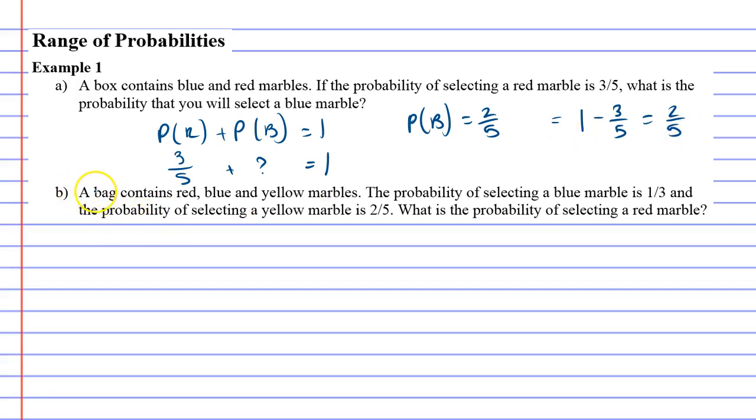Let's look at question B. A bag contains red, blue and yellow marbles. The probability of selecting a blue marble is 1 third, and the probability of selecting a yellow marble is 2 fifths. What is the probability of selecting a red marble?